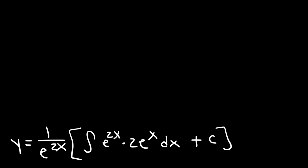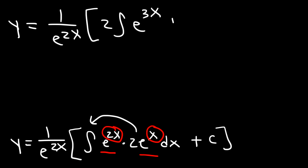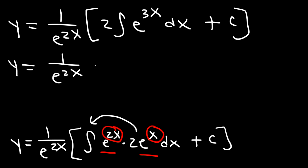Let's simplify the expression before integrating. e to the 2x times e to the x — we add the exponents 2x plus 1x to get 3x. So we have 2 times the integral of e to the 3x dx plus c. The antiderivative of e to the 3x is e to the 3x divided by 3.